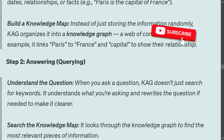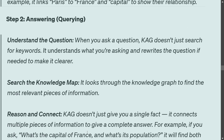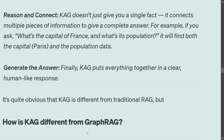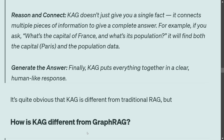The second step is answering, or querying. When the user gives a prompt, CAG tries to understand the question rather than just searching for keywords — which is an issue with RAG and sometimes graph RAG. It understands what you are asking and rewrites the question if needed to make it clear. Then it searches the knowledge map, reasons and connects — CAG doesn't just give you a fact, it connects multiple pieces of information to give you a complete, clear, human-like answer.